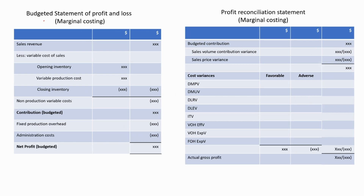Now let's discuss about how to reconcile the profit under the marginal costing system. This is the budgeted statement of profit and loss under marginal costing. We have the sales revenue, then deduct the variable cost of sales and the non-production variable cost, so we can arrive at the contribution. All these values are budgeted values. Under marginal costing, we use the budgeted contribution amount as the first line of the profit reconciliation statement.